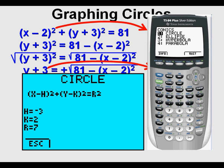Press ENTER again. We see the values of H, K, and R as input values. Let's try to emulate the circle we already graphed that was shifted 2 units to the right and 3 units down and had a radius of 9 units.